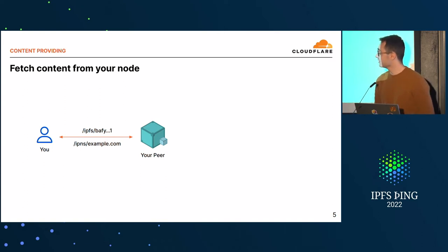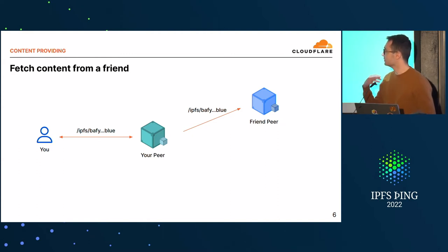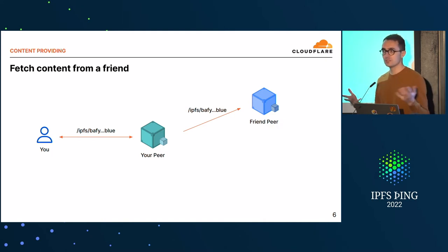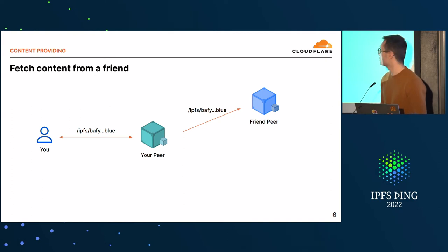Usually with IPFS you want to fetch content that is on another node. So you will send a request to your node saying, 'I want this content.' The node doesn't have it, so your node will send a request to another peer — your blue friend — and fetch the content, and everything works well.